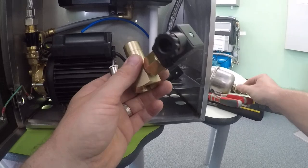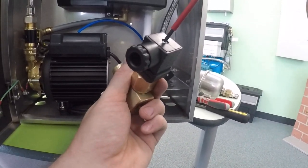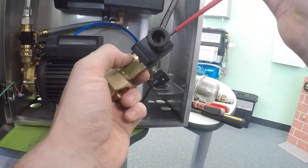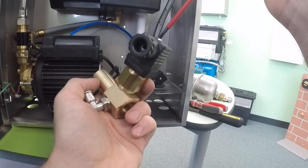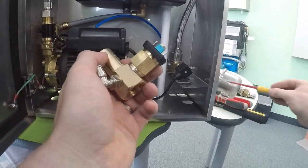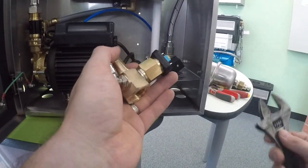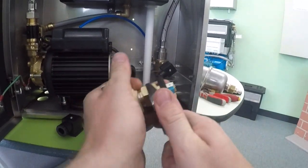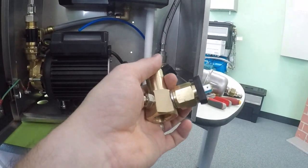So while we're here you can also double check our pressure switch, this part here. Start by taking off your cap. Loosen it off.